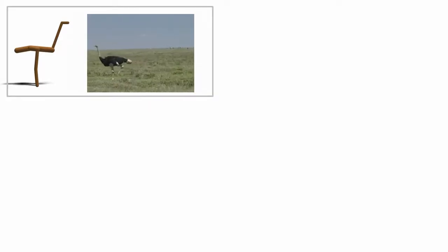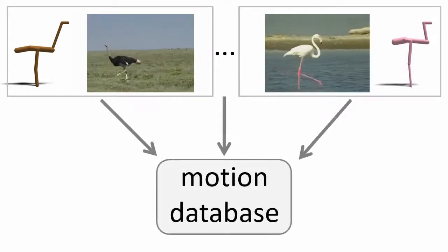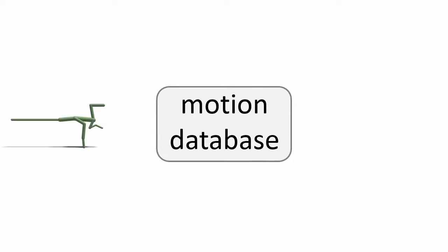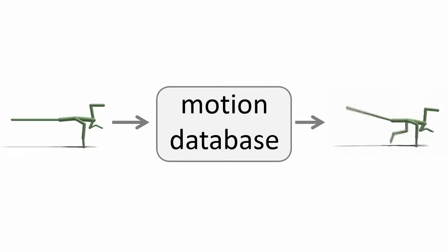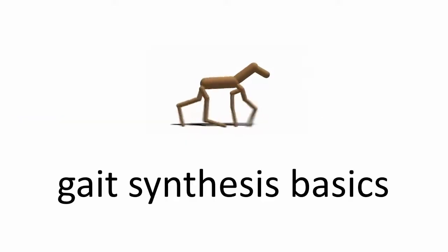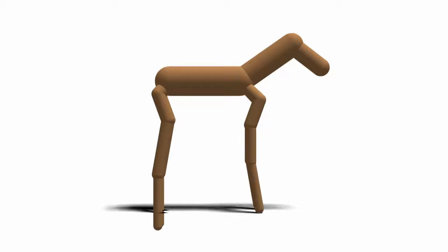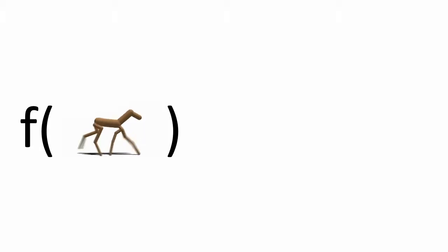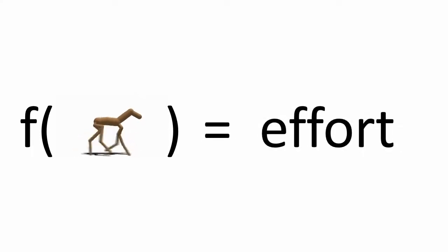For each animal, we know what it's shaped like and how it moves in the real world. Since we have this form and motion pairing for a bunch of different animals, we compile them all together into the motion database so that, given a new creature, we can look for animals with a similar shape and make an educated guess as to the motion of this new animal. We use an approach called space-time constraints because it's easy to apply to a wide range of different creatures. This approach starts by defining a function that takes as input a motion and computes something roughly analogous to the amount of effort the animal would have to exert to perform that motion.